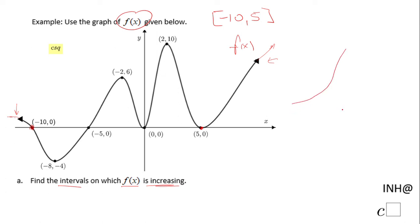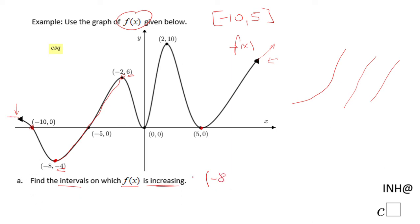A function is increasing when it goes up from left to right — something like this, an increasing function. So looking at the graph, we have a moment when the function goes up. The y-value goes from negative 4 up to 6, so the interval is from negative 8